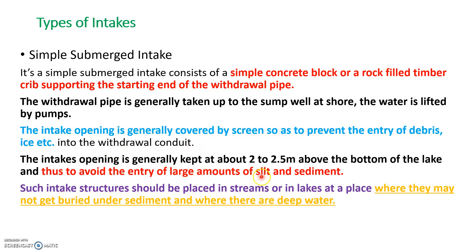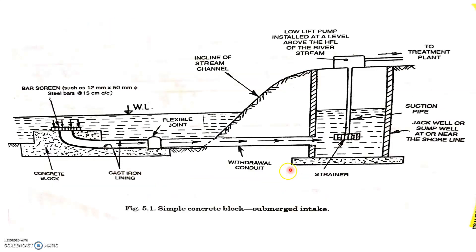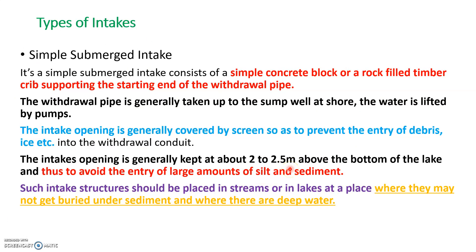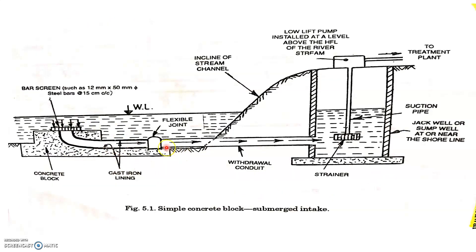The intake is generally constructed about 1.5 to 2 meters above the bottom so that silt does not enter. It is placed a little higher from that low level — around 2 to 2.5 meters above — so it should not be covered by silt. Generally it is placed in lakes or streams in such a way that it should not be buried under sediment. This is a simple concrete submerged intake structure.